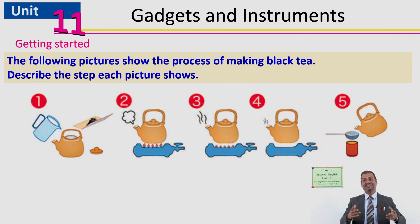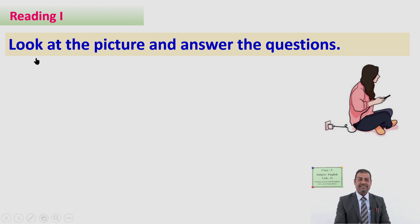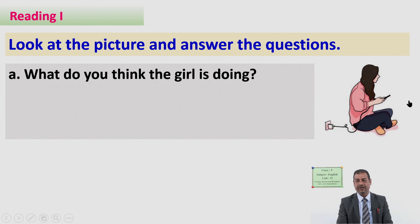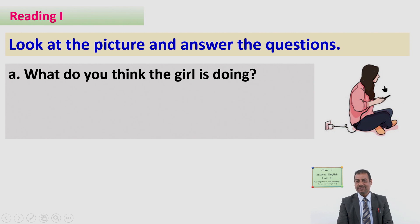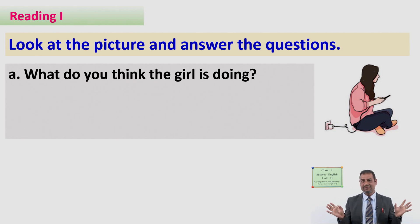From this activity, I hope you might have guessed what we are going to learn today. It is not about making tea. You have to look at this picture once again and make a good guess. Look at the picture and answer the question. You can see a girl — she is sitting, she has something in her hand, and you can see a plug. Yes, the girl is using her mobile phone.